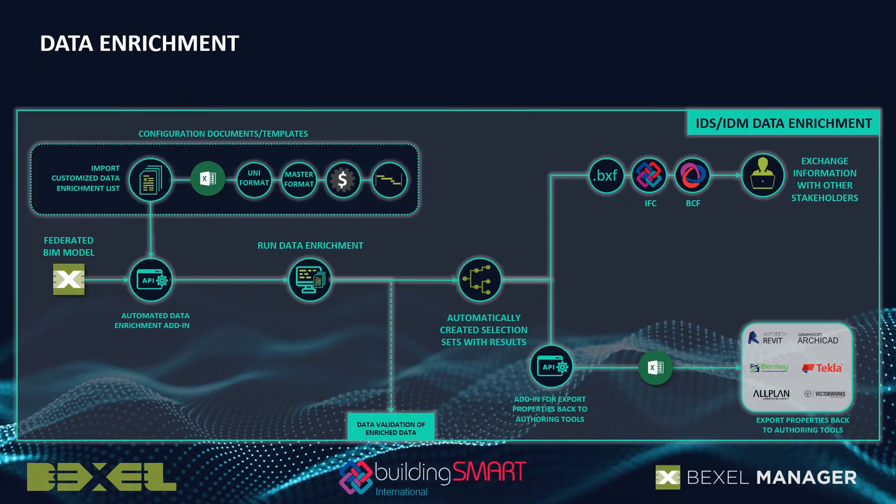Let's start with the first step: enriching the existing data of the model based on the robust data already present within it. For this, we're going to use configuration documents or templates which will be loaded to the model through an open API add-in, and based on rules defined by the user, the model will be enriched with an additional layer of information to serve as a basis for our work breakdown structure.